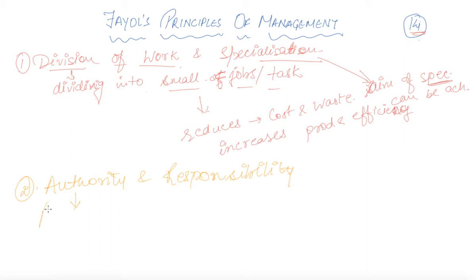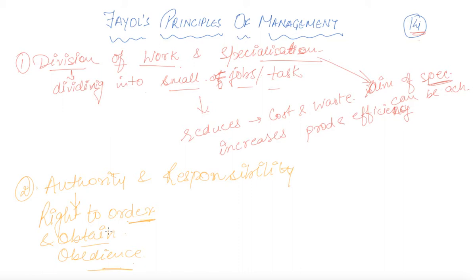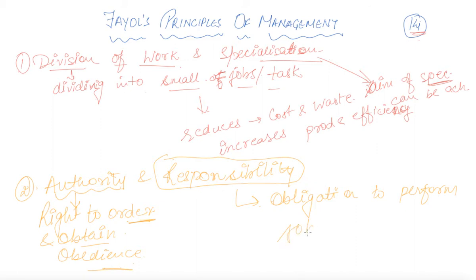By authority we mean the right to order — one is having the power to order his subordinate and also to obtain obedience, which means he can ensure that his subordinate is following whatever he had instructed. By responsibility we mean the obligation to perform some act — the obligation to perform the job assigned to them.